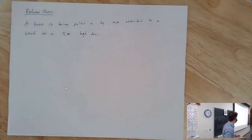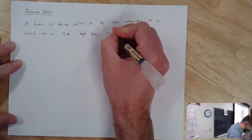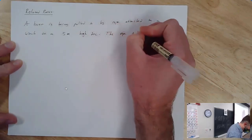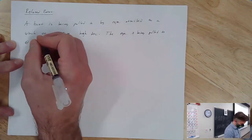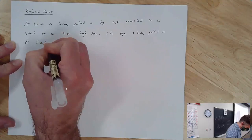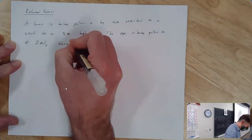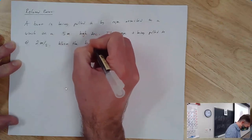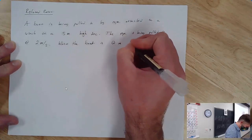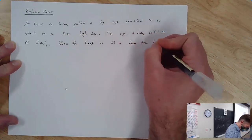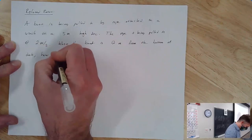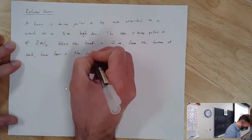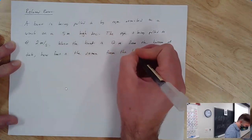The boat is being pulled in by a rope attached to a winch on a 5-meter-high dock. The rope is being pulled in at a rate of 2 meters per second. When the boat is 12 meters from the bottom of the dock, how fast is the distance from the boat to the bottom of the dock changing?